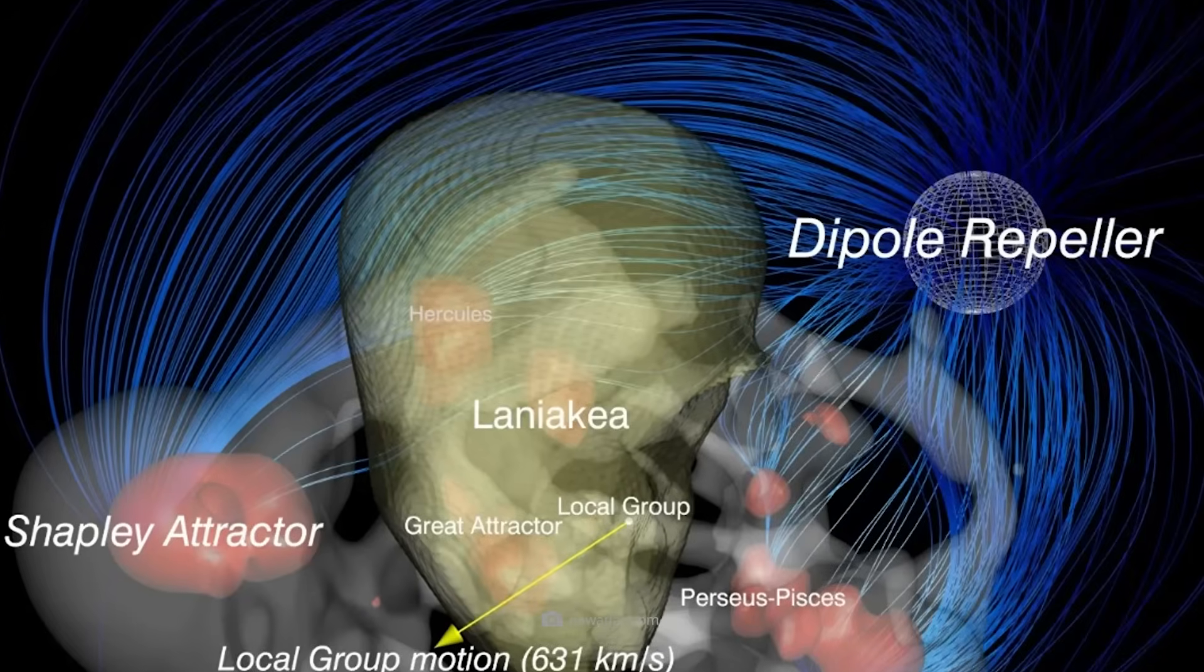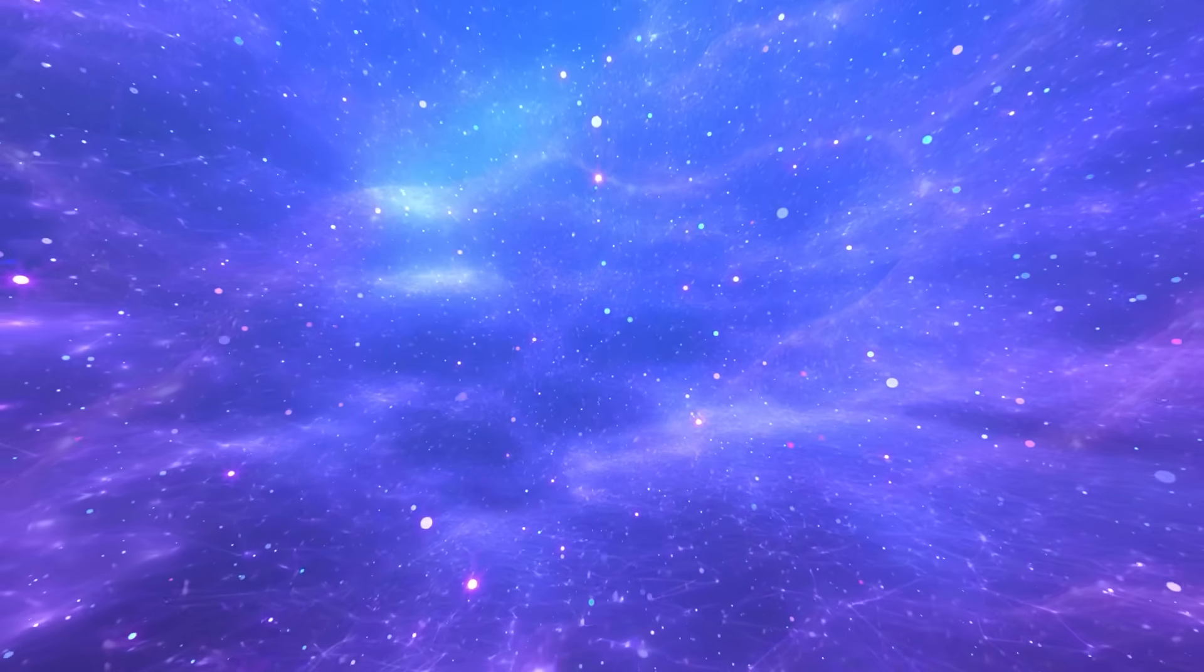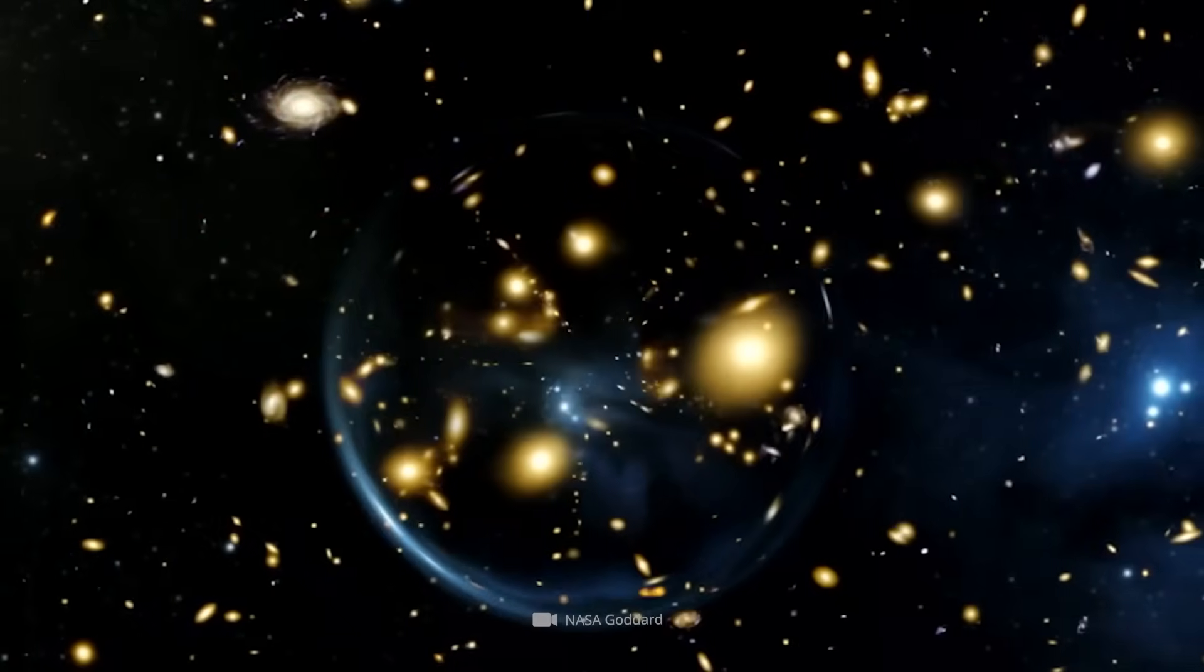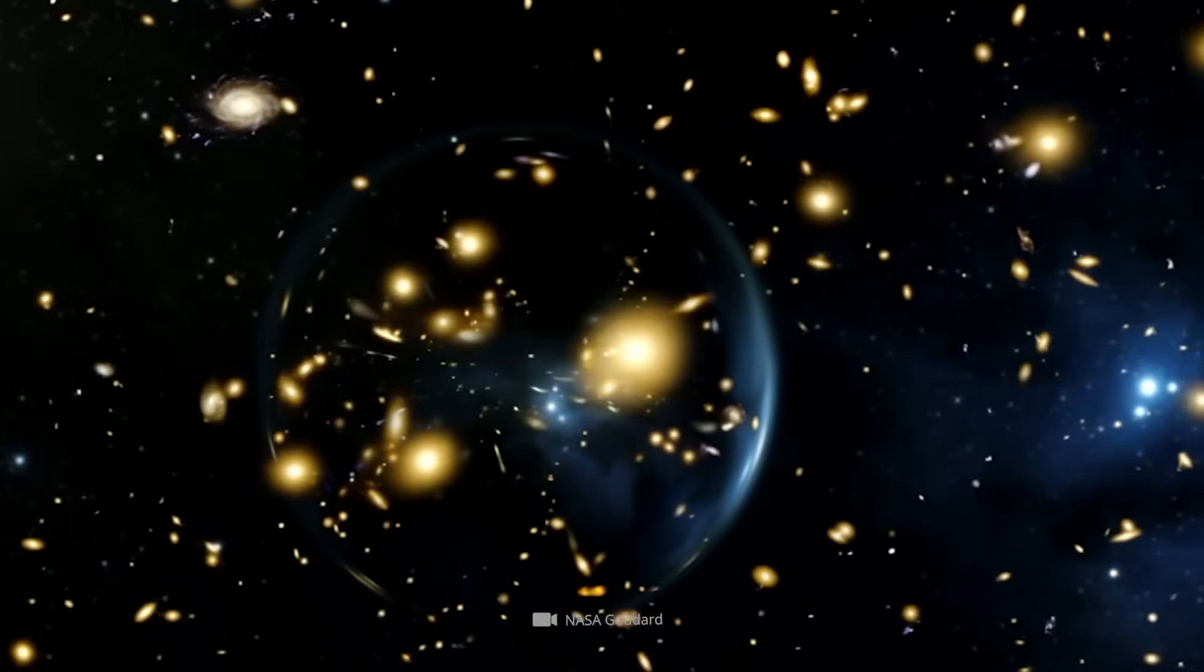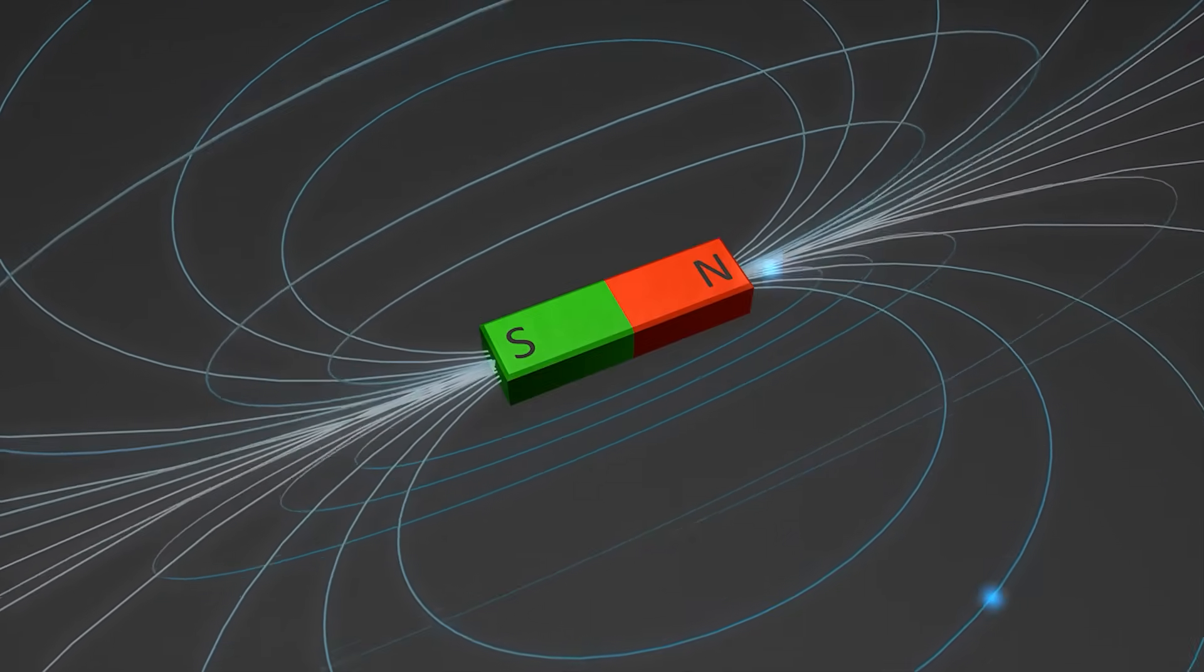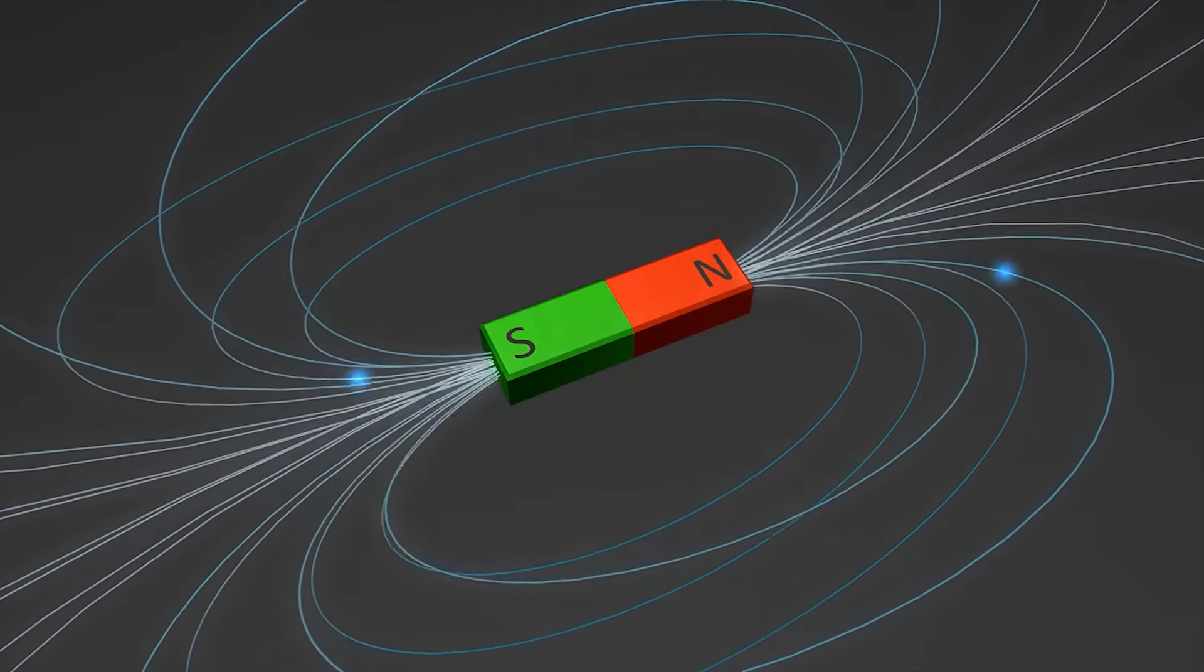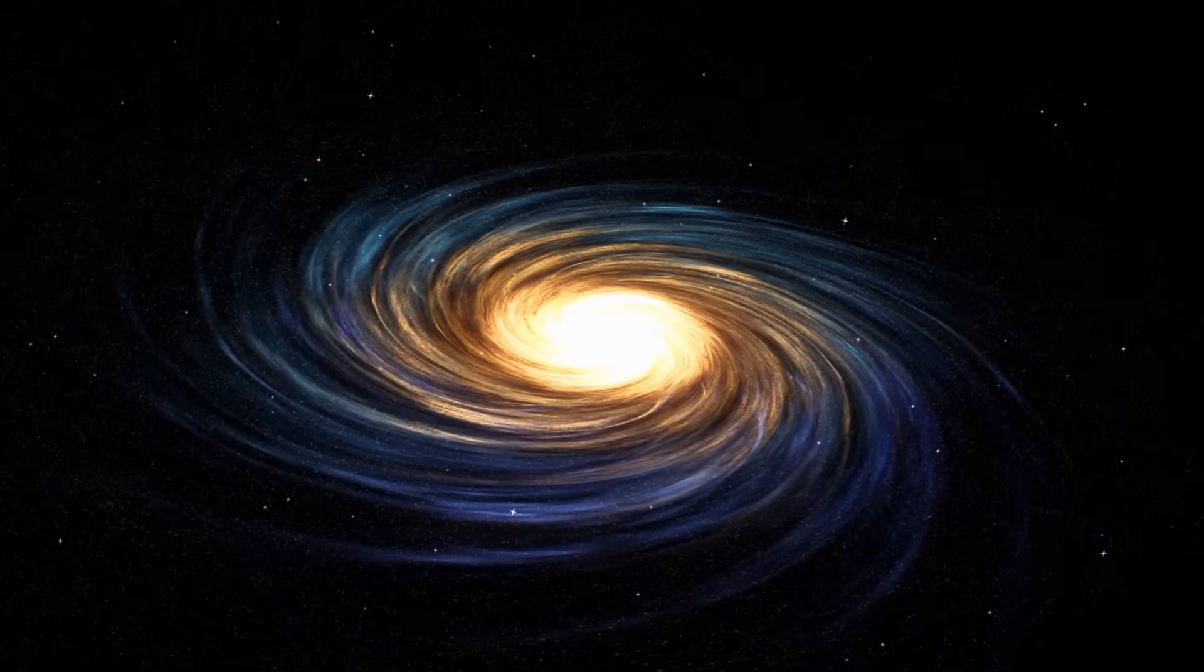The counterpart to the mysterious attraction is the Dipole Repeller. This is also a large region in the universe, but it has a repulsive rather than an attractive effect. The Dipole Repeller pushes galaxies away from itself and accelerates their flow towards the attractor. Similar to a magnet with two poles, hundreds of thousands of galaxies dance around these two points. The question arises as to what happens when our Milky Way reaches the attractor.